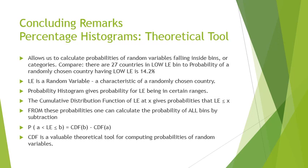The cumulative distribution function allows us to calculate the probability of falling into any bin. Once we have the CDF, for any bin from a to b, the probability of being inside that bin is calculated as the CDF at b minus the CDF at a. Subtracting these leaves the segment between a and b. This is why the CDF is a valuable theoretical tool, allowing computation of probabilities for all bins.